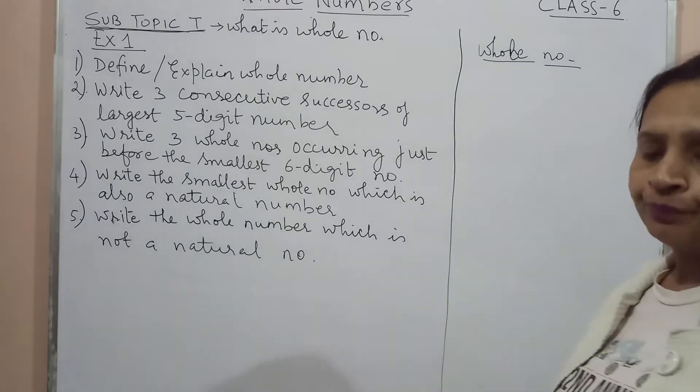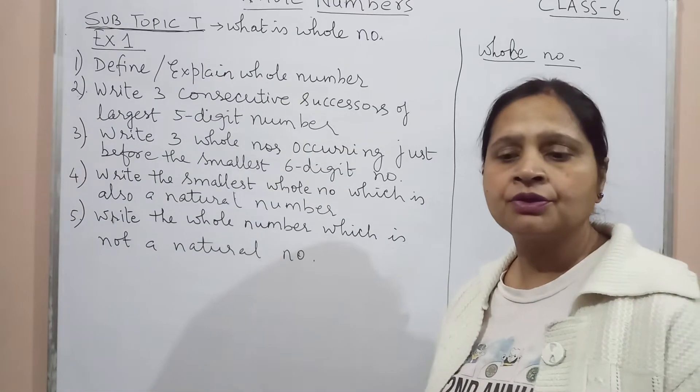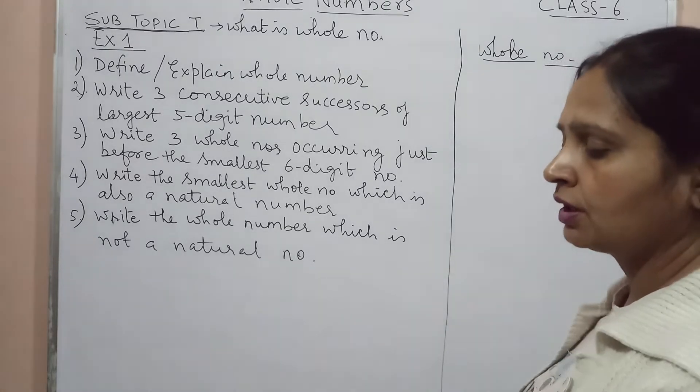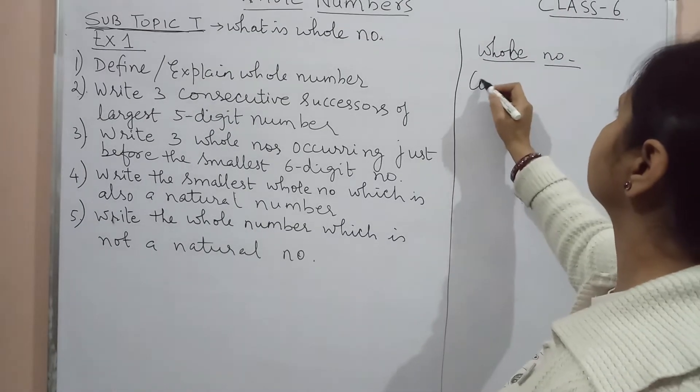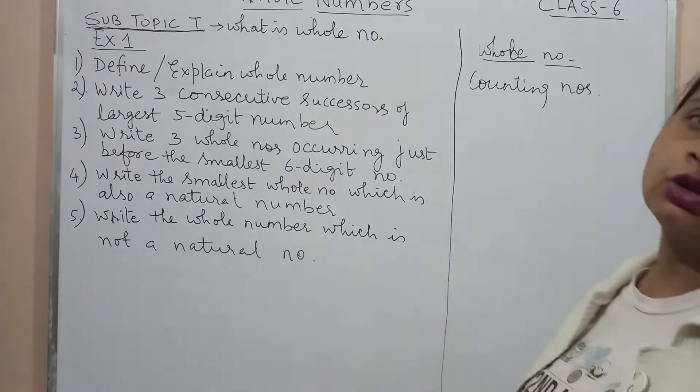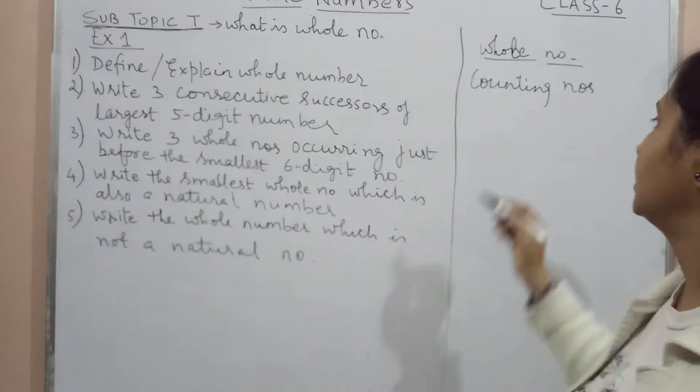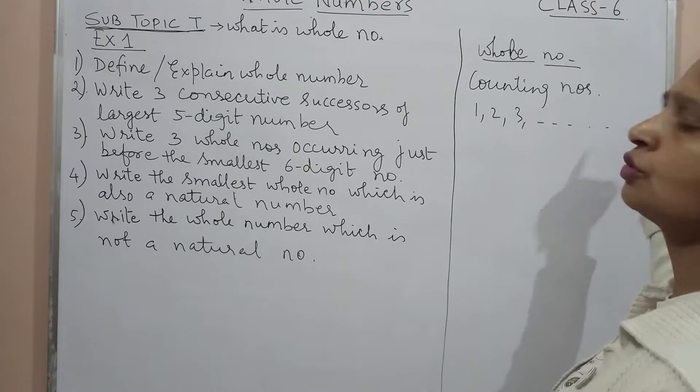Now we all know we have studied different types of numbers. Suppose at the very beginning we started with the counting numbers. Counting numbers are 1, 2, 3, and so on.